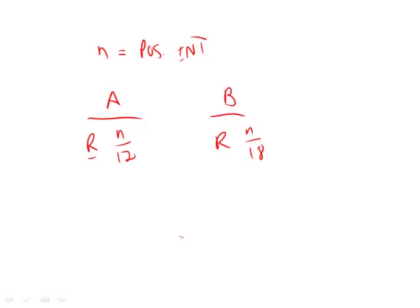Let's start with a straightforward number and assume that n is 18. Remember, n has to be divisible by 6, and 18 is divisible by 6. So if I divide 18 by 12, I get a remainder of 6. If I plug in 18 here, I get a remainder of 0. So right now, column A is greater.